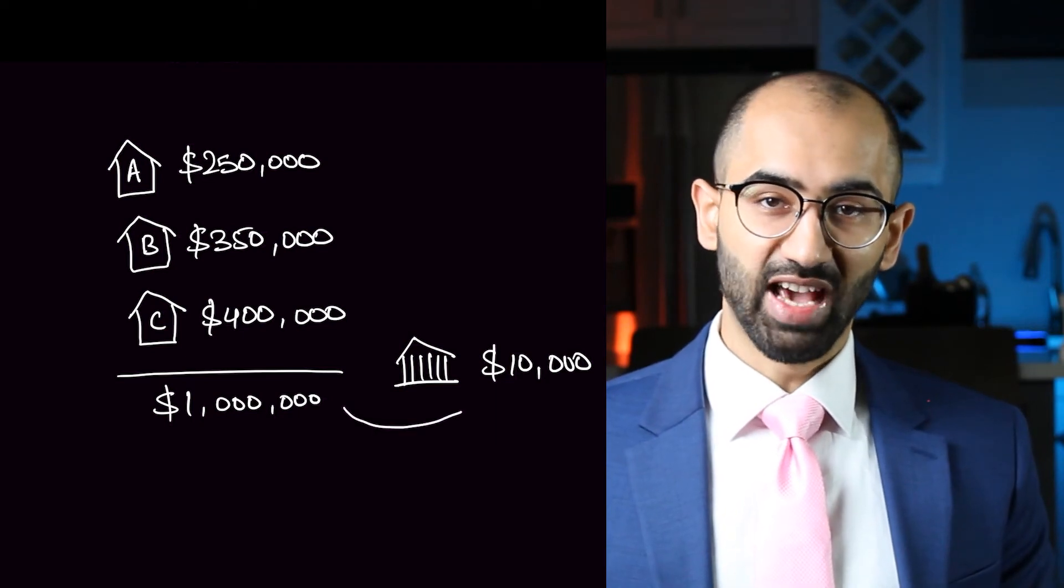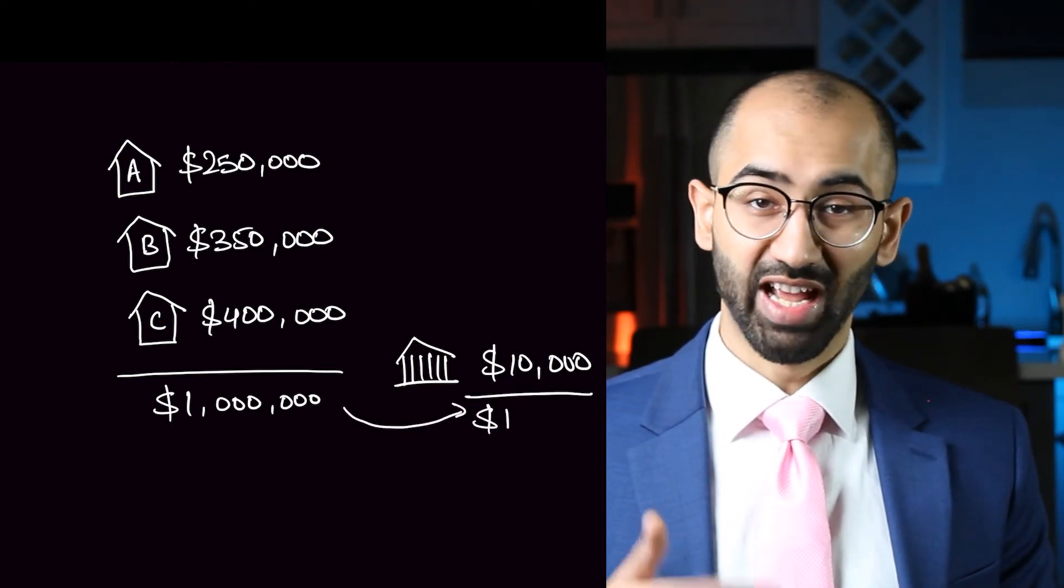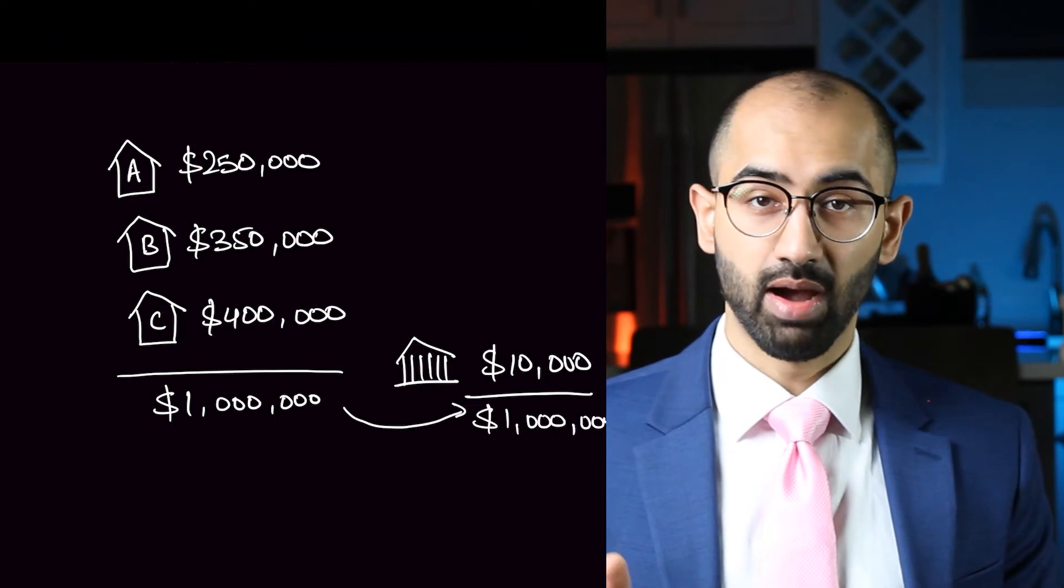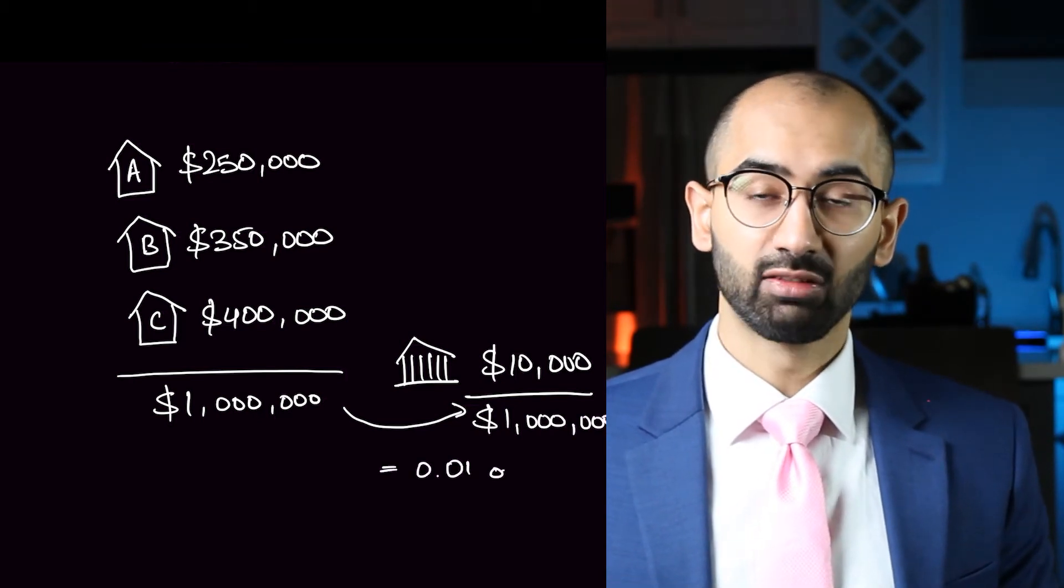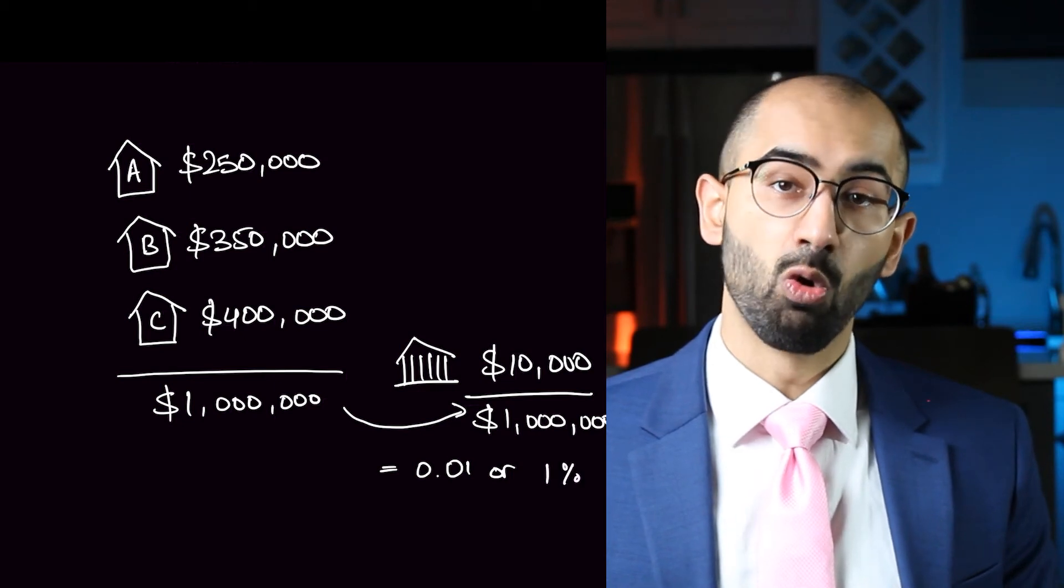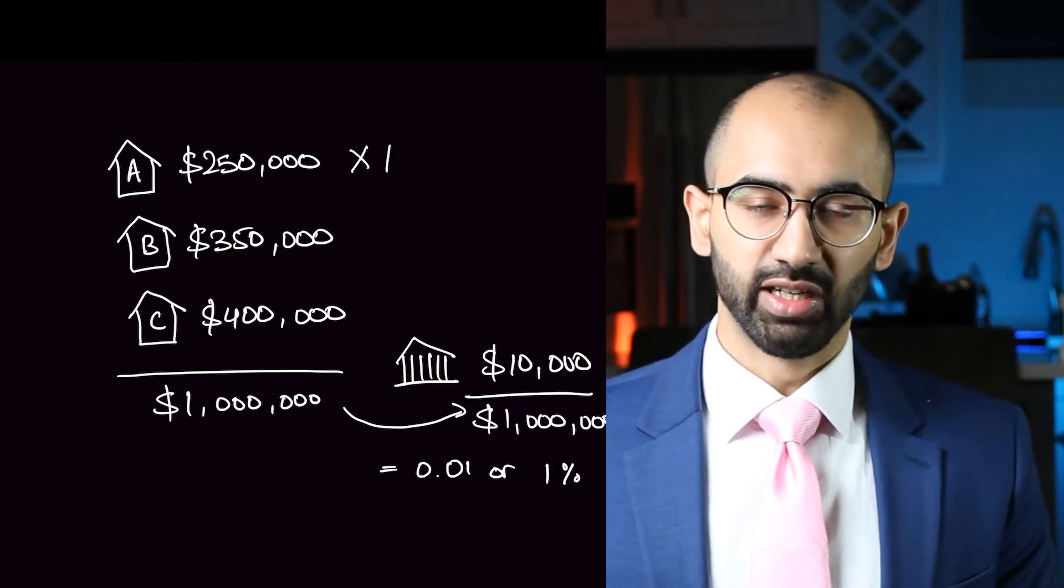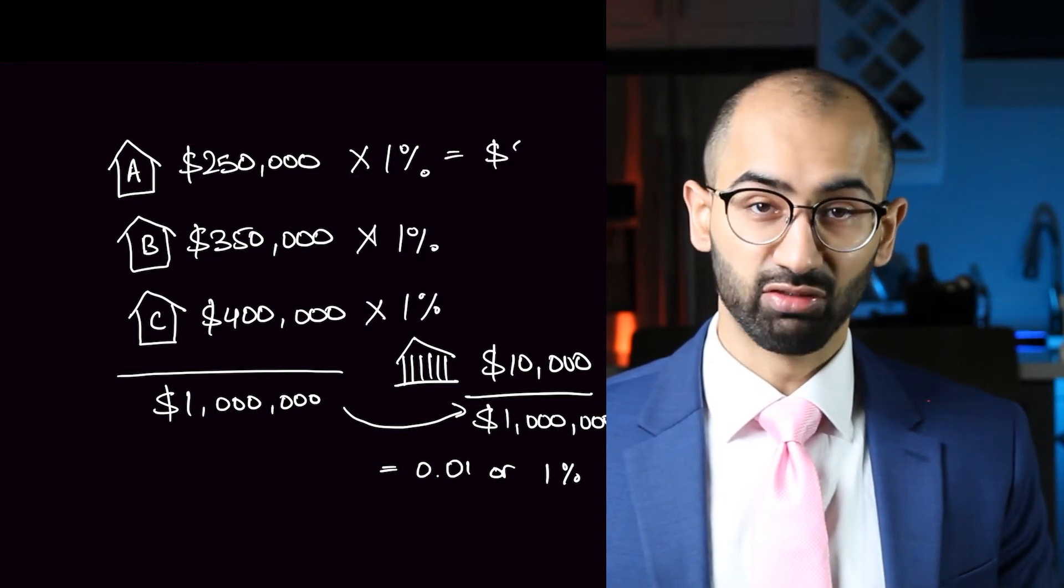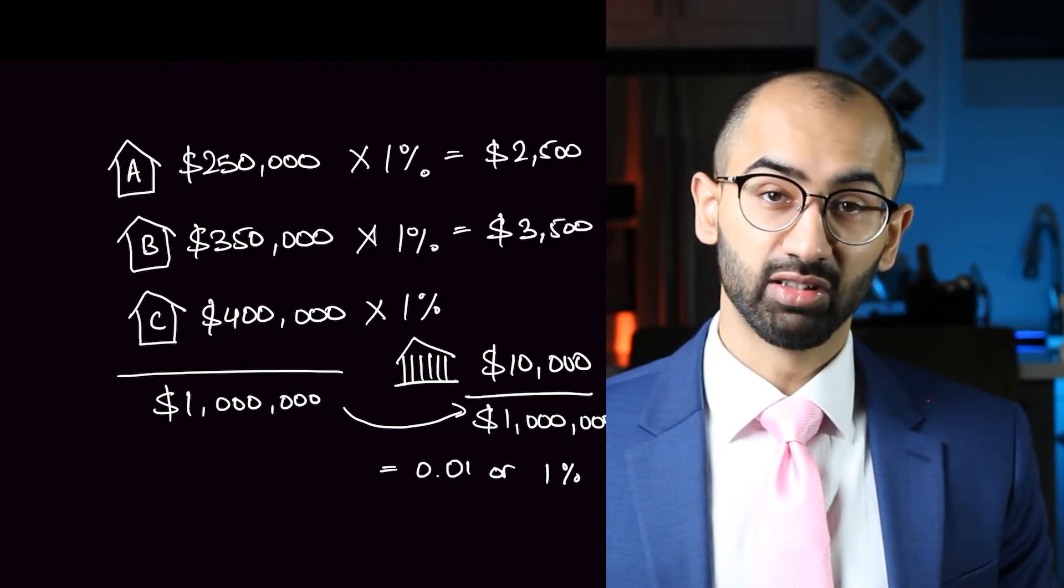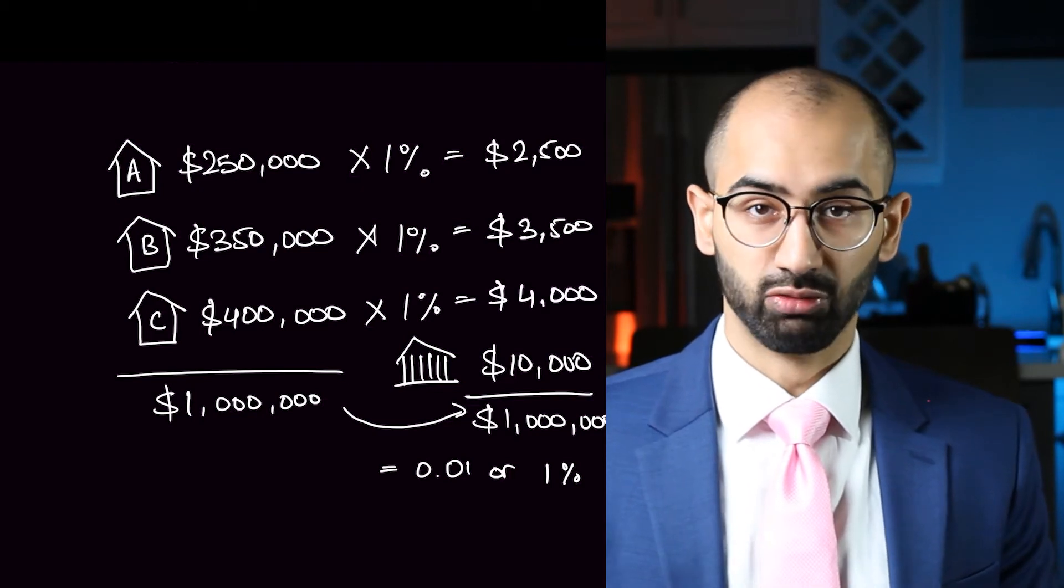If we divide the total tax that the city needs to collect, which is $10,000 here, and divide that by the sum of all the houses in the neighborhood, we're going to get a tax rate of 0.01 or 1%. Now that we have the tax rate, we can multiply this tax rate by the appraised value of each of the houses in the neighborhood, which will get us the amount of property tax that each house owes.